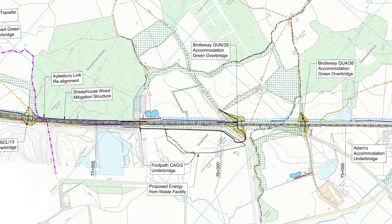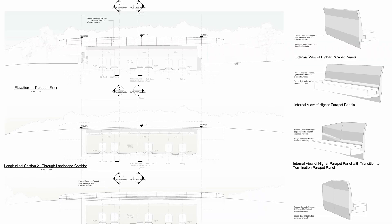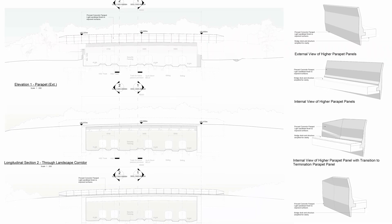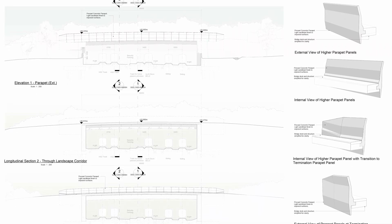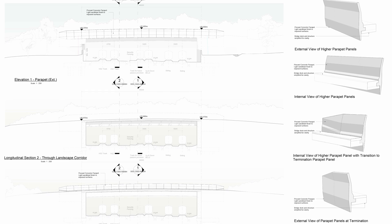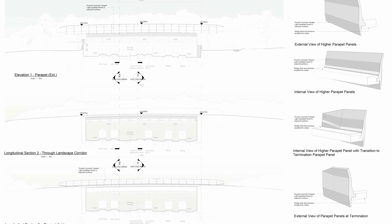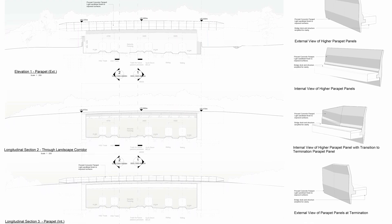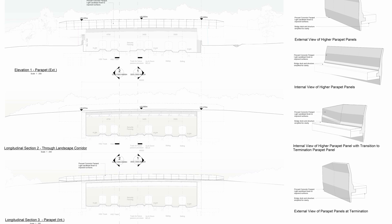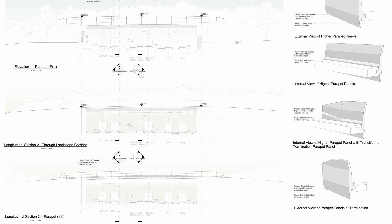In this next section we pass through Great Moor, where we see three bridges and the Bat Mitigation Structure, which runs alongside Sheep House Wood. We start this section with Bridal Way QUA 36 Accommodation Green Overbridge. This particular bridge has to be wide enough to take six tracks — two for HS2, two for network rail, and two for Great Moor sidings.